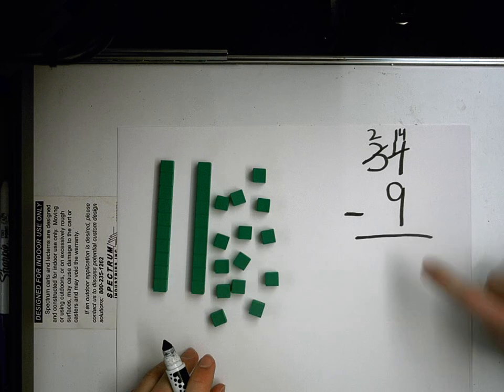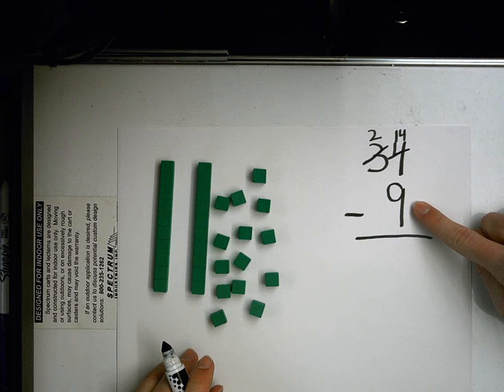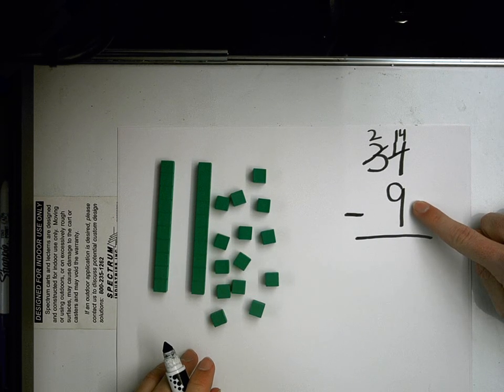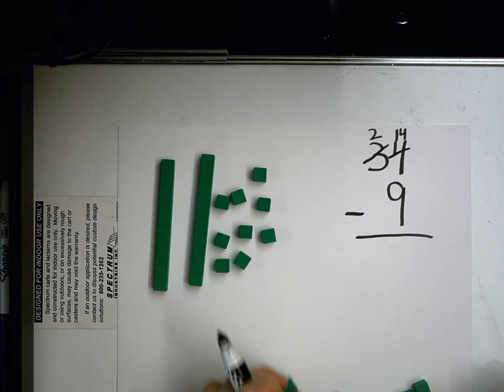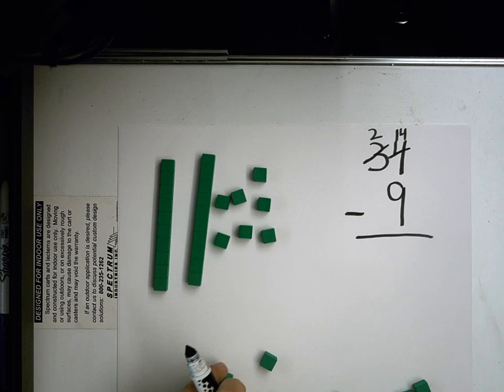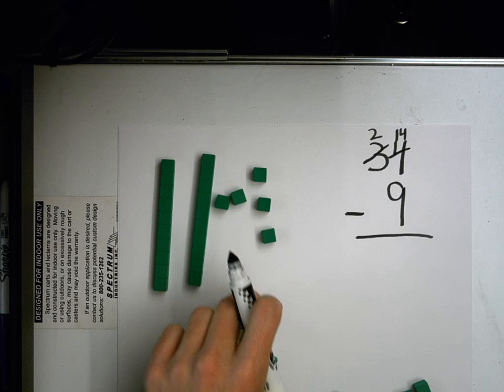Now, if I have 14 ones, I can take away 9. So 14, I'm going to take away 9. There's 1, 2, 3, 4, 5, 6, 7, 8, 9.